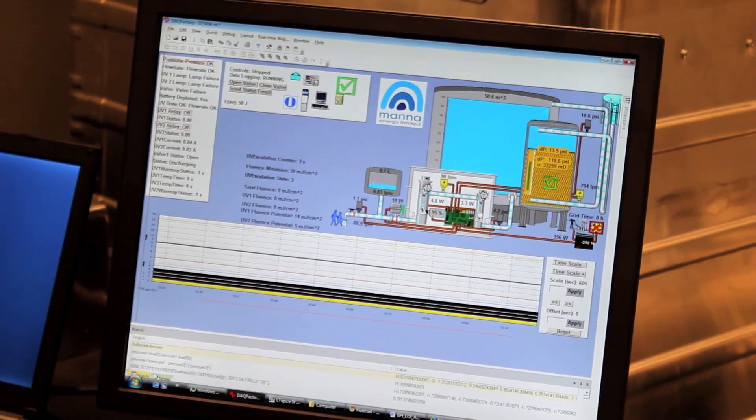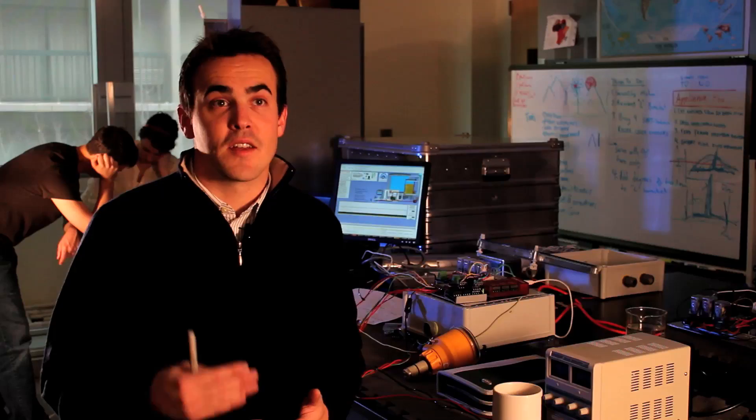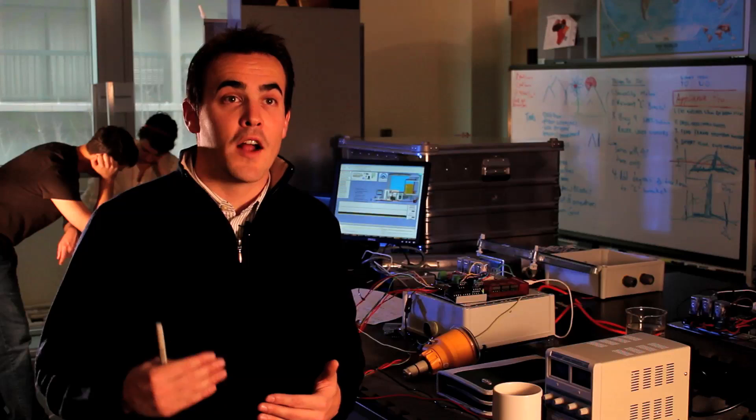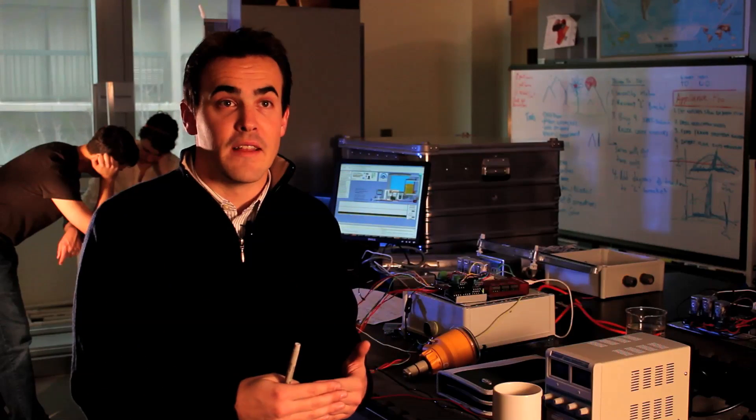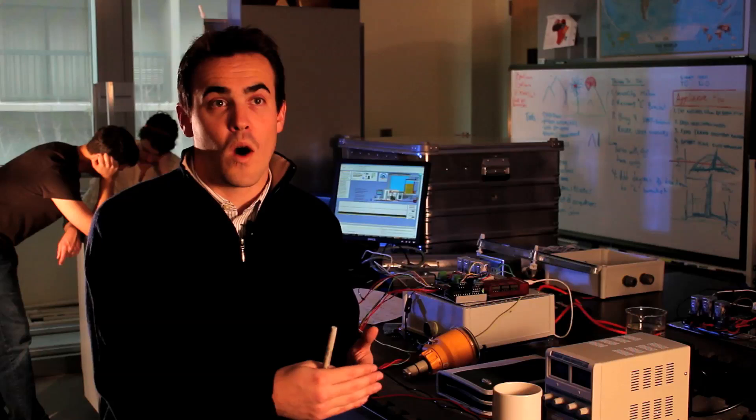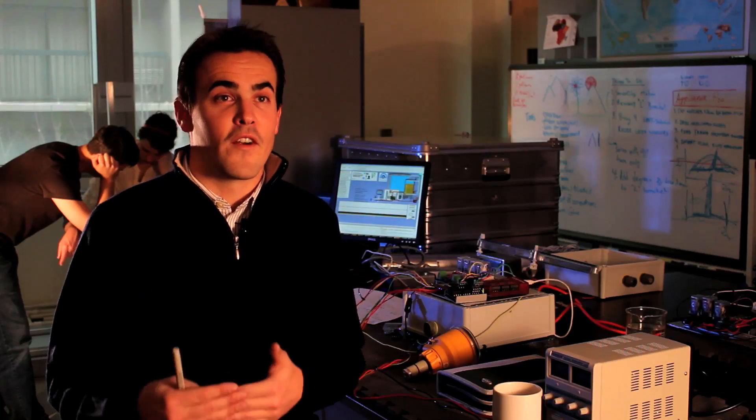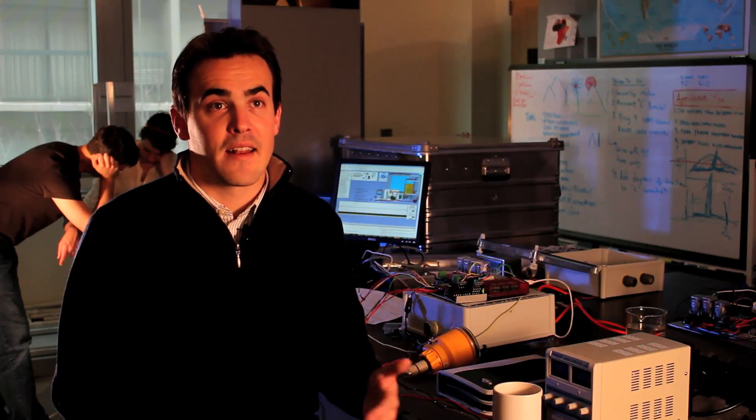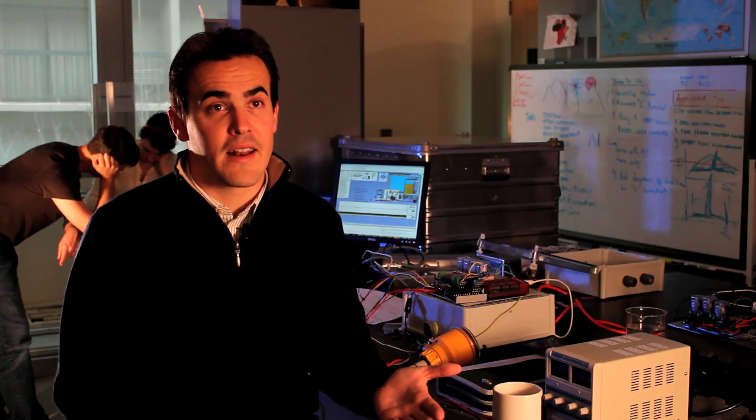We monitor flow rate, pressure, ultraviolet transmittance, ultraviolet lamp status, and we respond to the varying water quality and flow rate conditions and adjust our UV lamps to make sure that we're disinfecting the water all the time. And if the system fails, one of our technicians is notified automatically. It has a cellular phone board integrated in it.